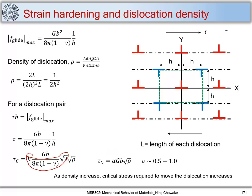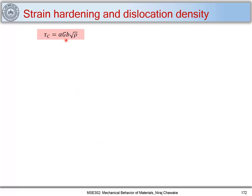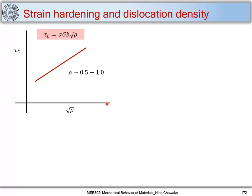When we plot τ_c versus √ρ, we can see it follows a neat linear relation, from which we can find that αGb equals approximately 0.5, lying between 0.5 and 1. As we increase shear strain, the mobile dislocation density ρ_m increases when b and x-bar (the average distance a dislocation can move) remain constant.